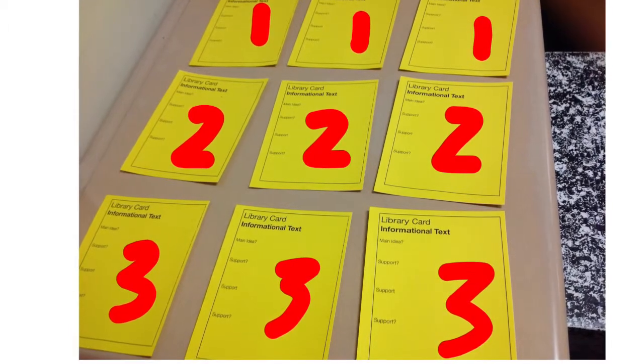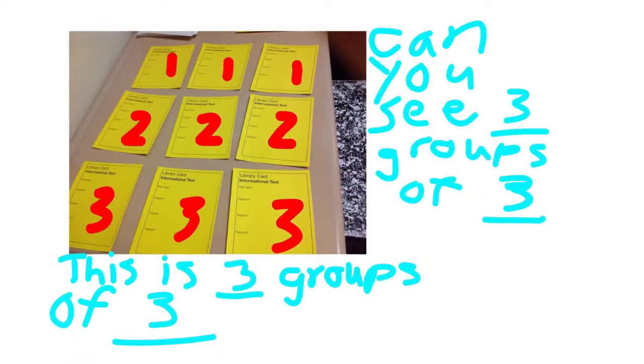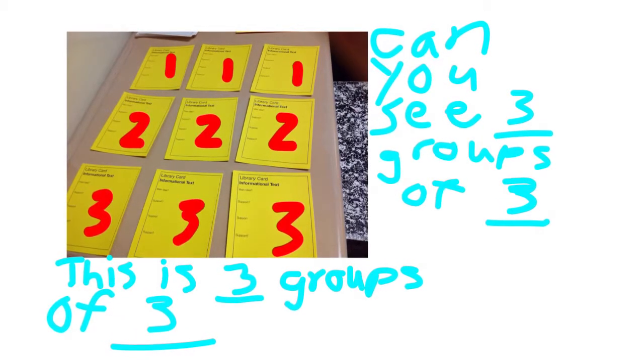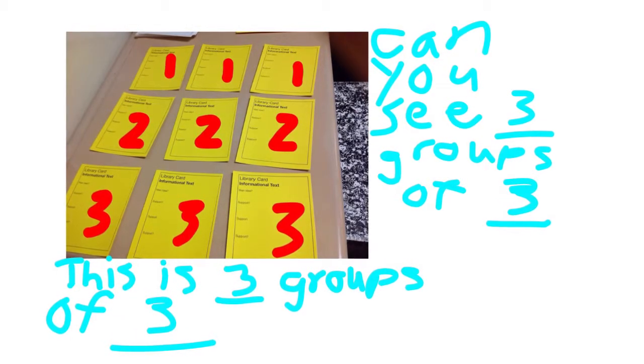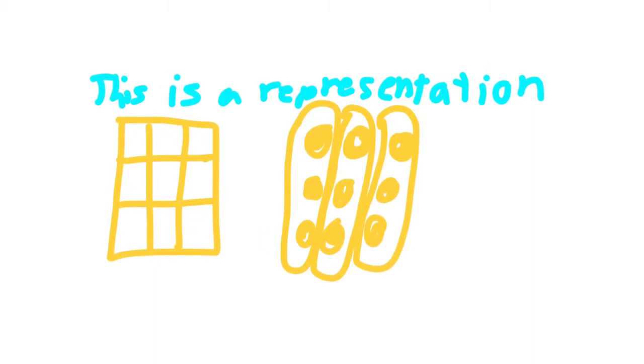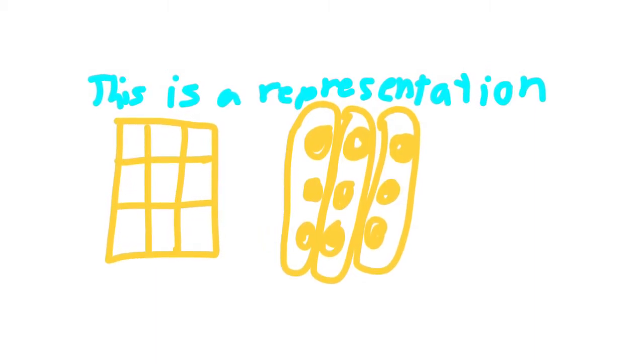This is three groups of three. Can you see three groups of three? This is three groups of three. Can you draw a representation? This is a representation of three groups of three.